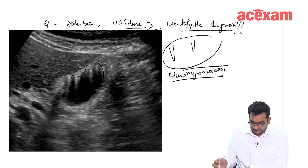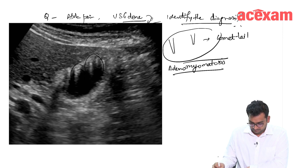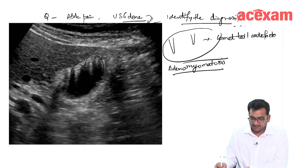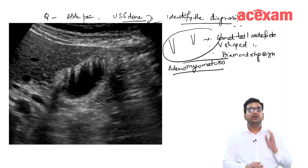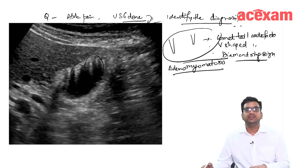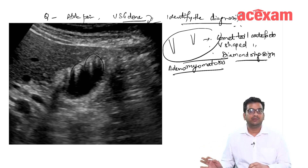These kinds of artifacts are called comet tail artifacts, also known as V-shaped artifacts, also known as diamond ring sign. So, a comet tail artifact is seen in adenomyomatosis. V-shaped artifact is seen in adenomyomatosis, and a diamond ring sign is seen in adenomyomatosis.